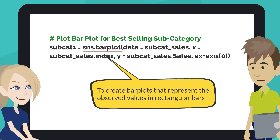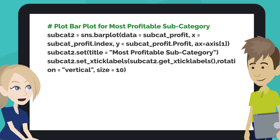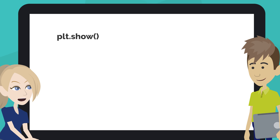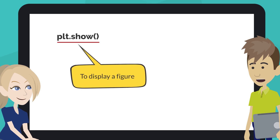To use this plot, we choose a categorical column for the x-axis and a numerical column for the y-axis, and it creates a plot taking a mean per categorical column. We can use the same code above replacing sales with profit. The matplotlib.pyplot.show function displays a figure.